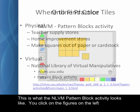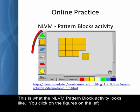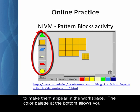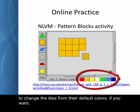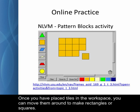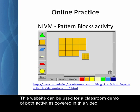This is what the NLVM pattern block activity looks like. You click on the figures on the left to make them appear in the workspace. The color palette at the bottom allows you to change the tiles from their default colors if you want. Once you've placed the tiles in the workspace, you can move them around to make rectangles or squares. This website can be used for a classroom demo of both activities covered in this video.